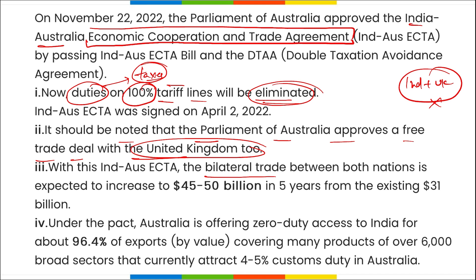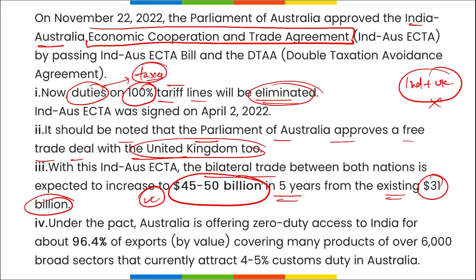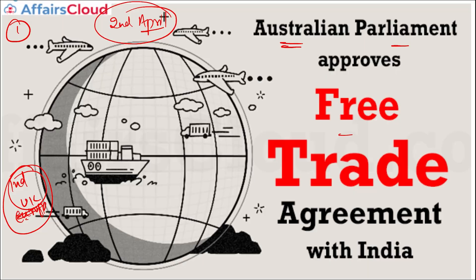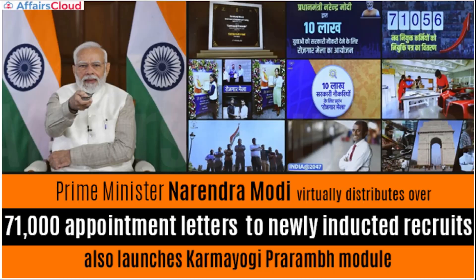With this free trade agreement, bilateral trade between India and Australia is expected to increase from the existing 30 billion dollars to around 45 to 50 billion dollars in the next four to five years, as eliminating import-export duties encourages greater trade between the two countries.